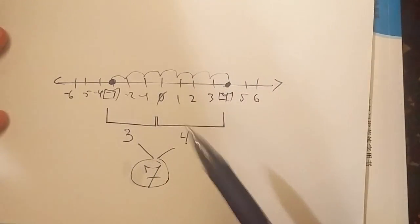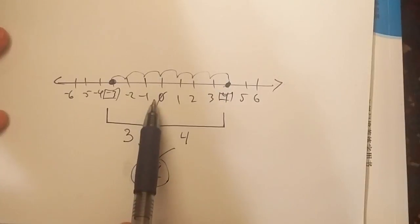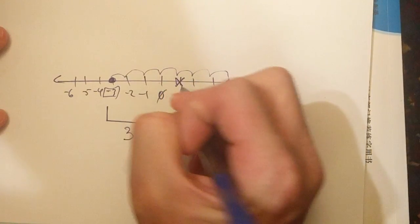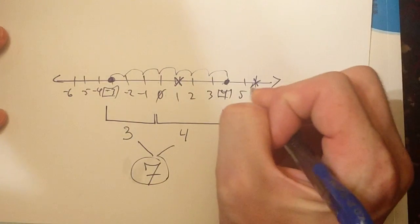This works all the time if one of my numbers is negative and the other number is positive. Well, what happens if, let's say, I start at one and I want to go all the way to six?